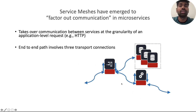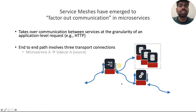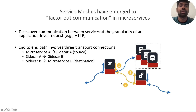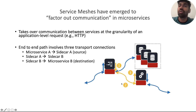It's important to highlight that there are three distinct transport connections in an end-to-end path, as you can see in the figure. The first is between the source application and the sidecar, the second is between the two sidecars, and the third is between the destination sidecar and the application. The sidecar can provide a rich set of features within this second transport connection without modifying the applications or their transport connections.